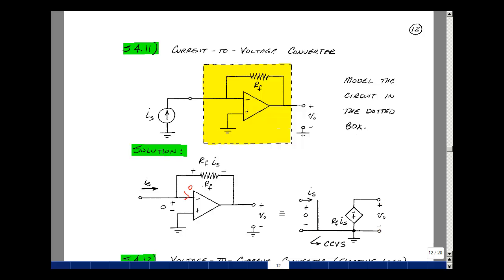If you look at this, this is actually our definition of a current-controlled voltage source. This is also called a current-to-voltage converter.